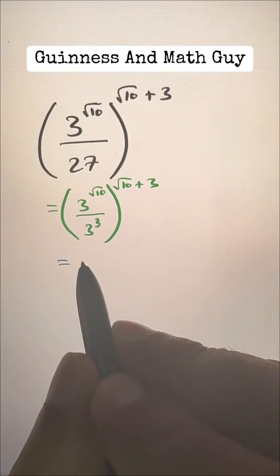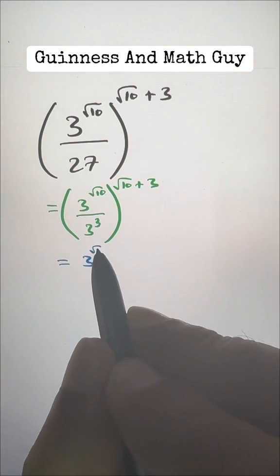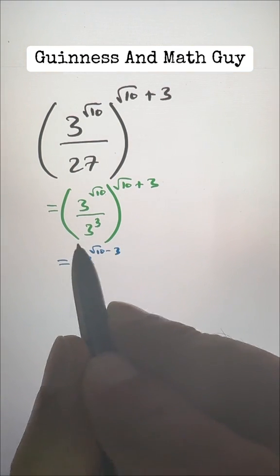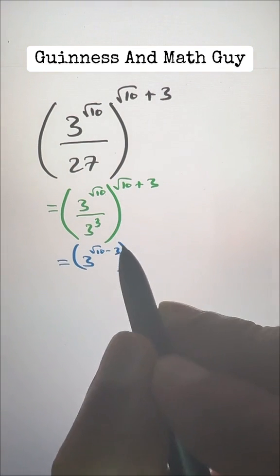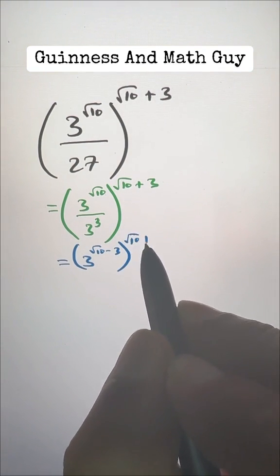So we can write this as 3 to the power square root of 10 minus 3, whole to the power of this square root of 10 plus 3.